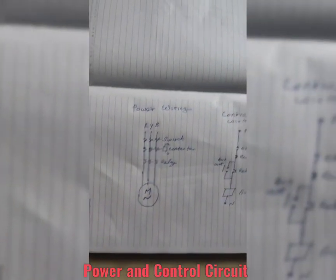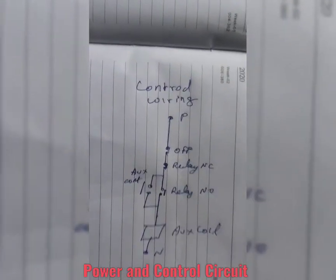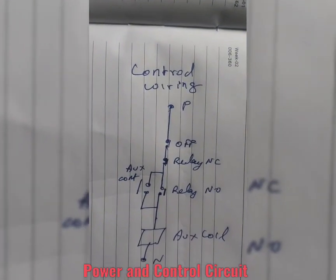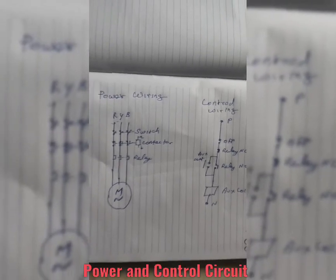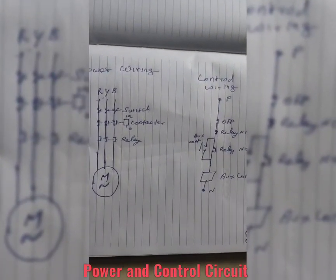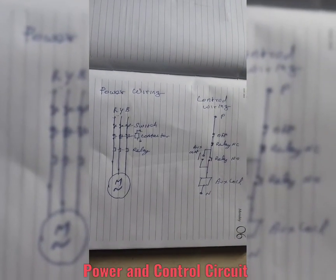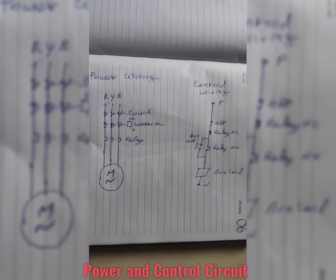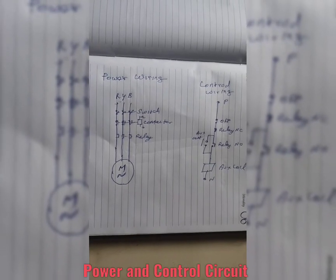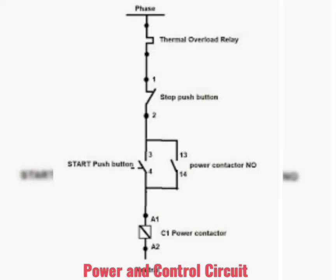The coil voltage is 440V. One phase is connected to the start push button, then relay NC point, then relay NO point, then to the contactor coil, and finally neutral.